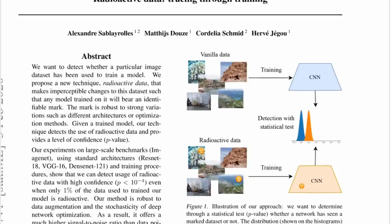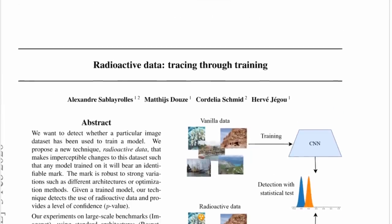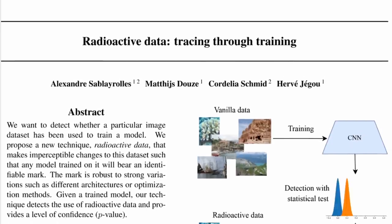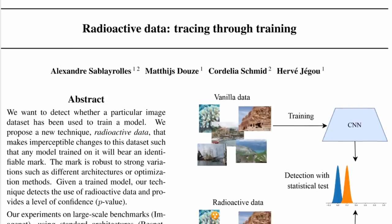Well, this paper is a little bit like this, not entirely. The explosion part — I think they're still working on a follow-up paper. But in this paper called Radioactive Data: Tracing Through Training, by Alexandre Sablerolle, Mathis Douze, Cordelia Schmidt and Hervé Gégou, they develop a method where you can at least detect if a given model was trained on your data or not.